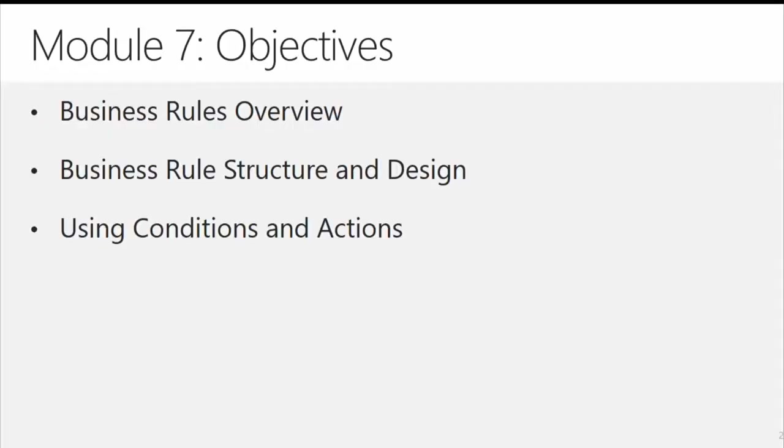In this module, we're going to talk a little bit about what business rules are, provide an overview of how they work, how the design engine works when creating business rules, and look at the structure and design elements to see how you build them from scratch. We're also going to talk about how conditions and actions play into account with business rules and how what happens inside the application will affect other aspects as users move forward.